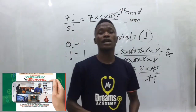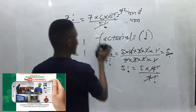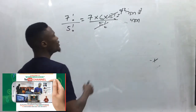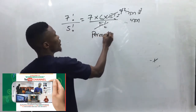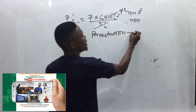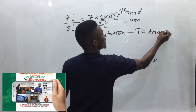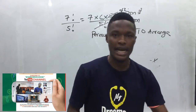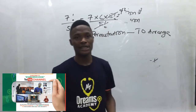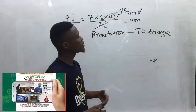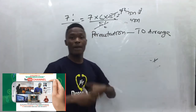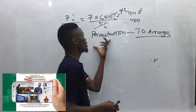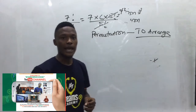We will use factorials in combination and permutation. Let's start with permutation. Permutation simply means to arrange. In questions, they may not use the word permutation — they'll say 'in how many ways can this be arranged.' Whenever you see the word arrange, that is permutation.